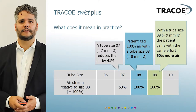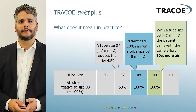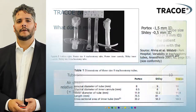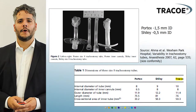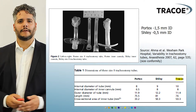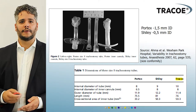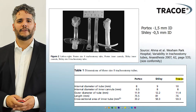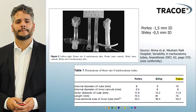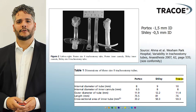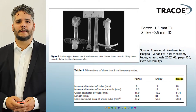It is quite obvious that the choice of the correct tube for your patient is very important. Here is a comparison of two products available on the market that are both indicated as a size 8. In the middle you see the inner cannulas, and you can see that the inner diameter is different from one another. There is also a comparison chart showing three different products all indicated as a size 8.